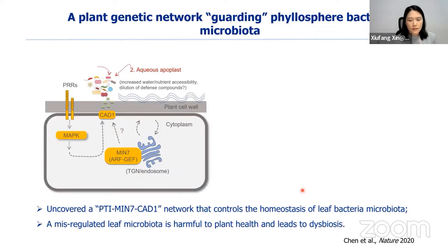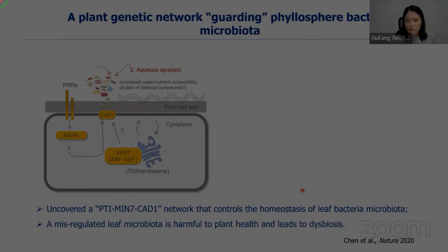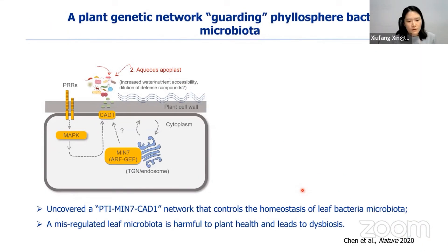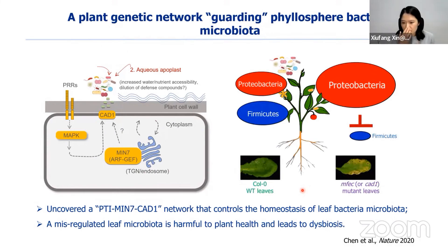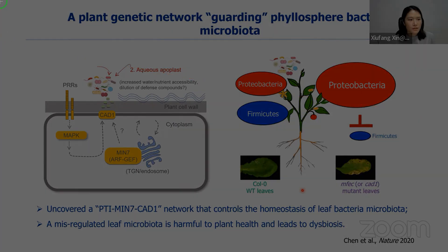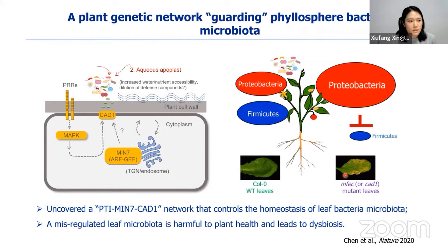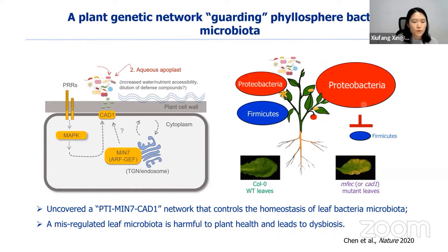The take-home message is that we uncovered a plant genetic network that guards or controls the homeostasis of leaf microbiota. If components in this network are mutated, certain opportunistic microbes will over-proliferate, leading to dysbiosis and causing damage to the plant host.